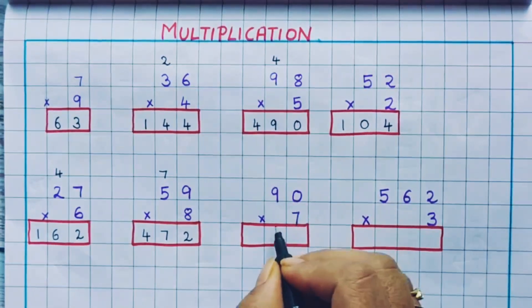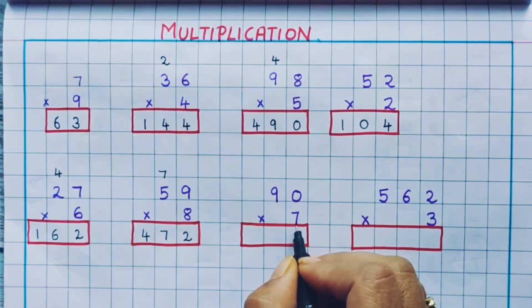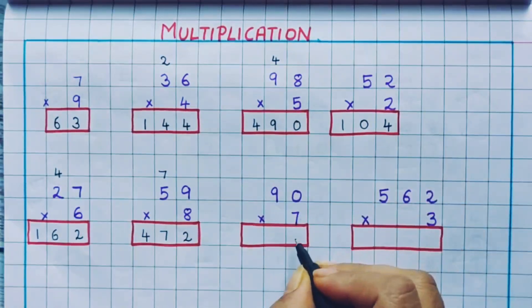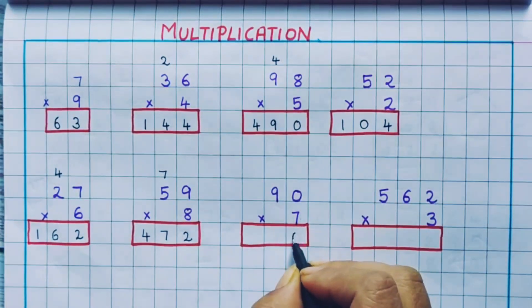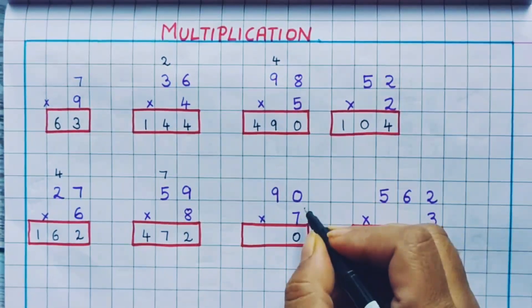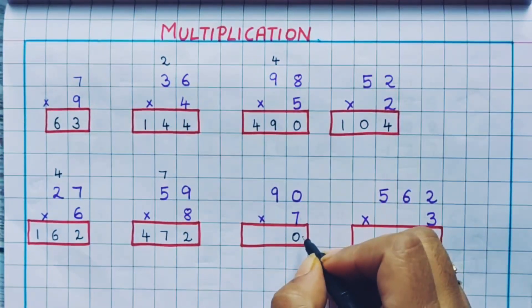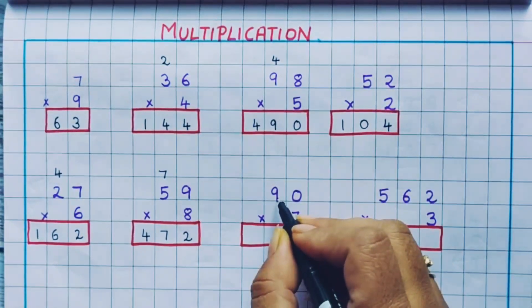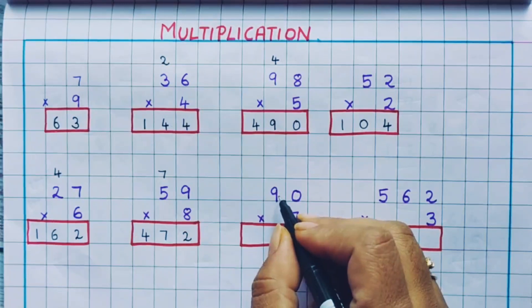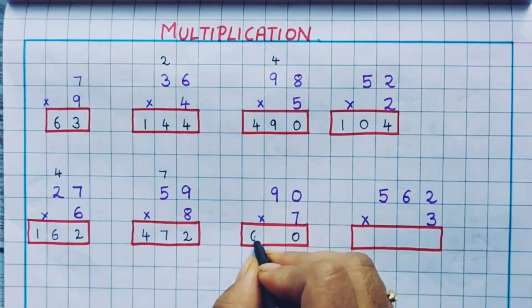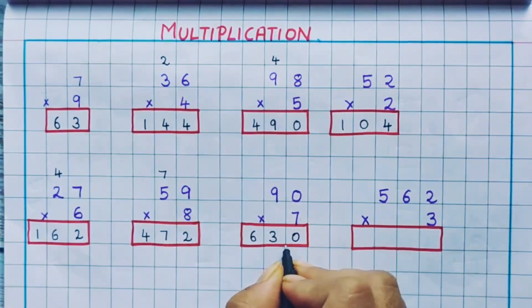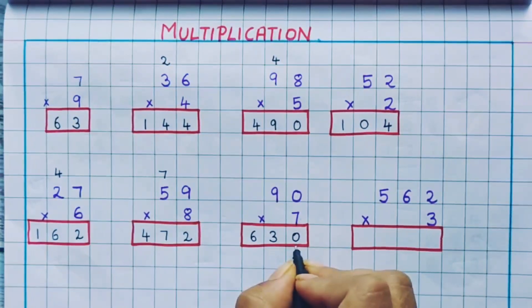Next: 90 into 7. 7 0s are 0 — anything into 0 is 0 only. Now 7 9s are 63, so we write 6 and 3 here. The answer is 630.